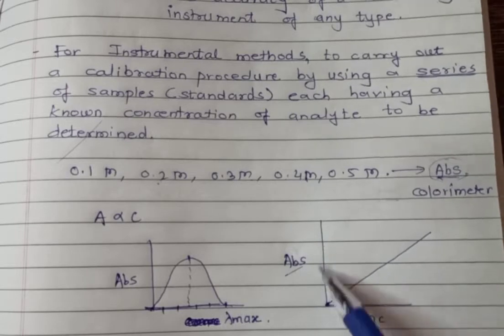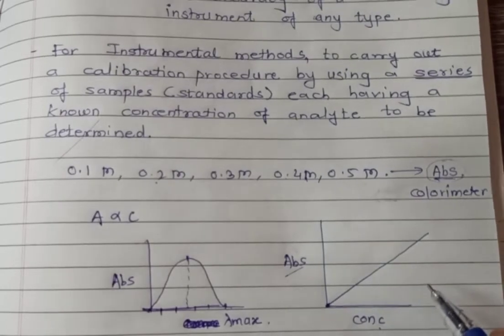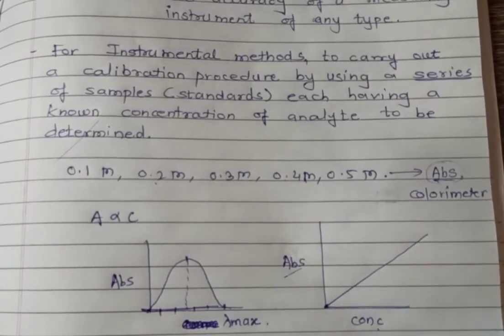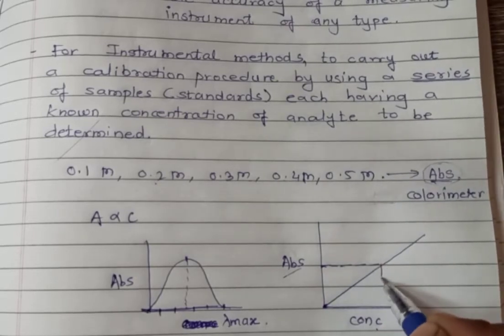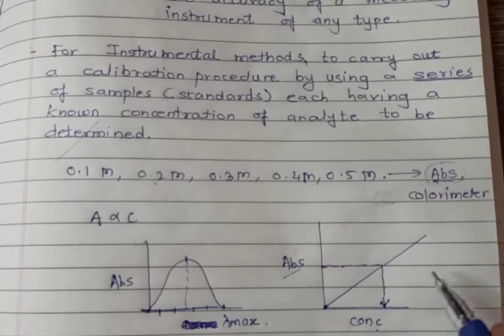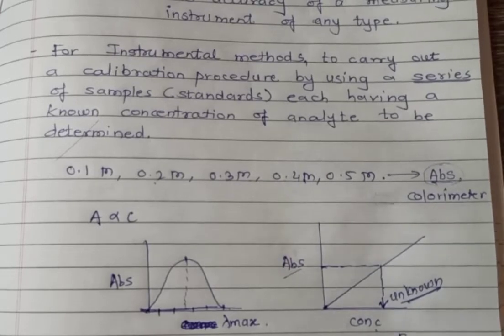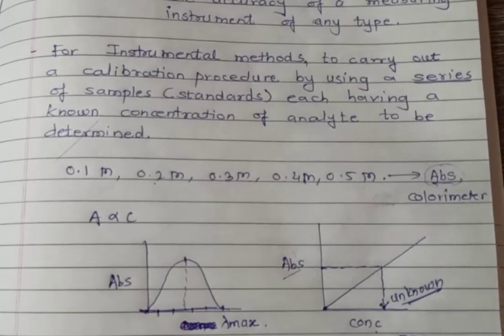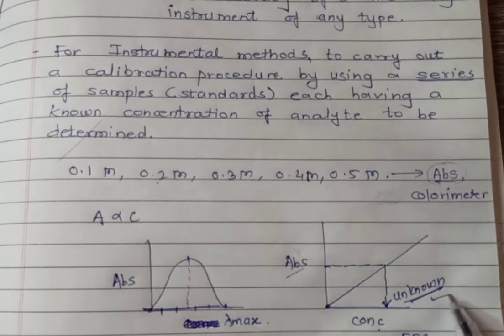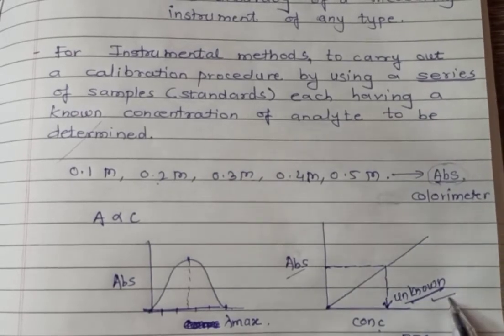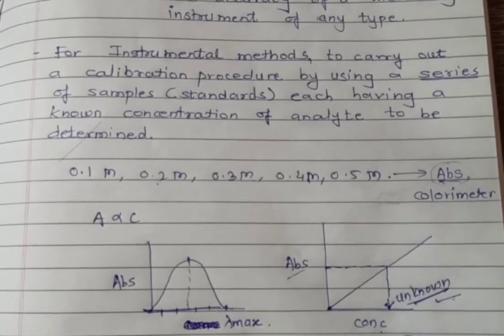You plot a graph of absorbance versus concentration. If there is an unknown concentration given by your teacher, the unknown sample gives a certain absorbance value. You interpolate this line and can find out the concentration of the unknown. The same experiment has been performed on the flame emission spectrophotometer in the last semester. This is a calibration method to find the concentration of an unknown substance by comparing its signal with that of a known series of standard solutions.